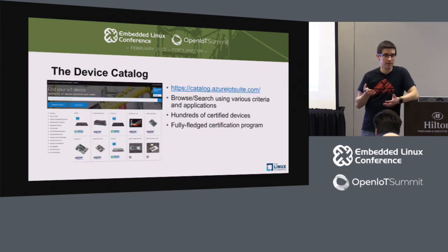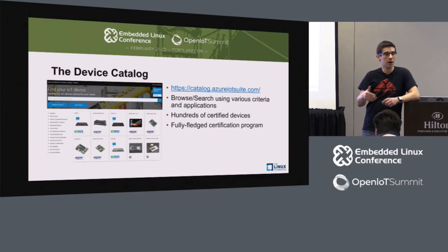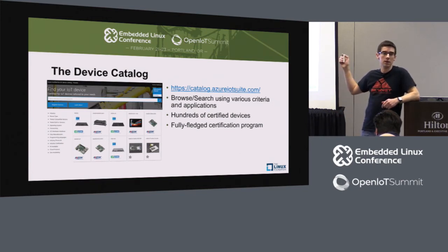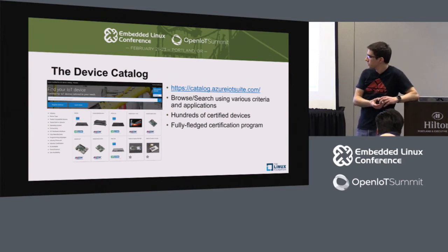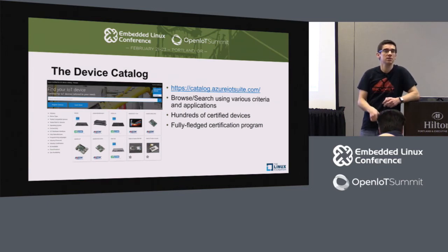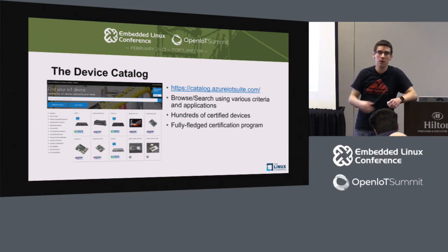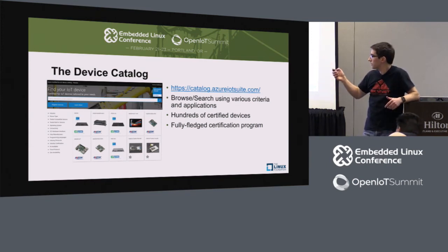Maybe you don't have a device, or maybe you're making a device and want to advertise that it can connect to Azure IoT Hub. We have a partner program and a device catalog. If you go to catalog.azureiotsuite.com, you can find literally hundreds of devices that we have tested and we know our SDKs work on. If you're building devices and you're interested in being listed there, you have a link to sign up — it's a quick thing.